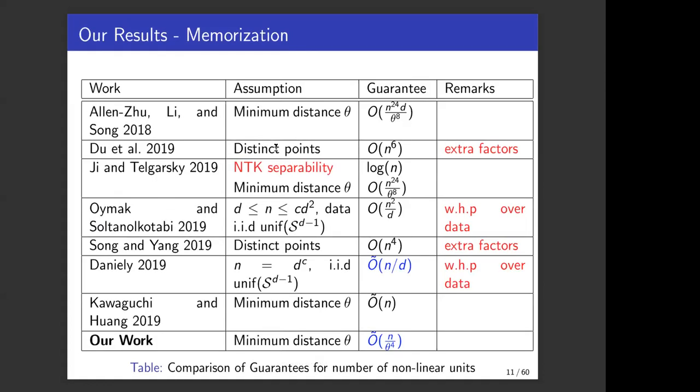This is a comparison of the various results. We see that the older results require a very high polynomial dependence on n and d, and some of them even have extra factors which might be exponential in d or n which are not enumerated. The two other works which come very close to this are the one by Danielli, which shows that when n is only polynomially large in d and it's uniformly distributed over the sphere, you need no over-parametrization. And Kawaguchi and Huang who show with a similar setup that you need O tilde n neurons to memorize. In our work, we have similar results where we have O tilde n relu units required to memorize arbitrary data, when n can be even exponentially large in d.